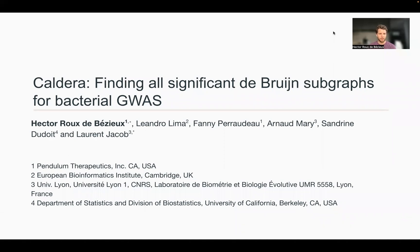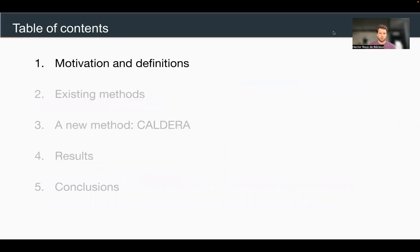Hi everyone, thanks for joining. Today I'm going to be presenting Caldera, which is a new method we developed to do bacterial GWAS on de Bruijn graphs. The presentation is going to go in five points: first I'll explain why bacterial GWAS is an interesting problem, then give a quick overview of the literature and why there was a need for a new method. Then I'll present Caldera and show how it performs on both simulated and real data.